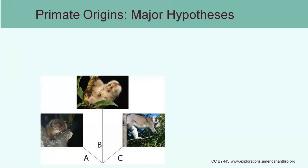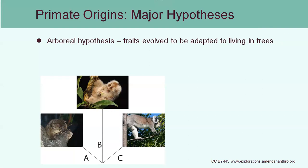So why did primates evolve? Where did they come from? We actually have three different possible hypotheses, and all of them have different types of evidence supporting them. The first hypothesis is the arboreal hypothesis. Arboreal has to do with forests and trees. This hypothesis explains that the reason primates look the way they do is because they evolved to be adapted to a forest habitat. The vast majority of primates alive today do live in the forest, specifically tropical forests, regardless of which continent they live on.